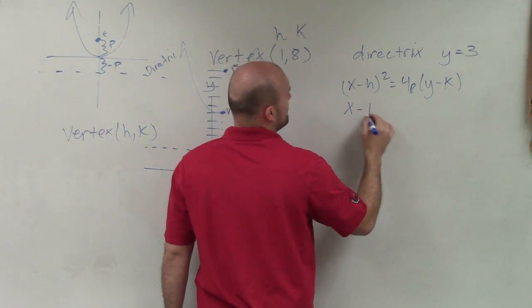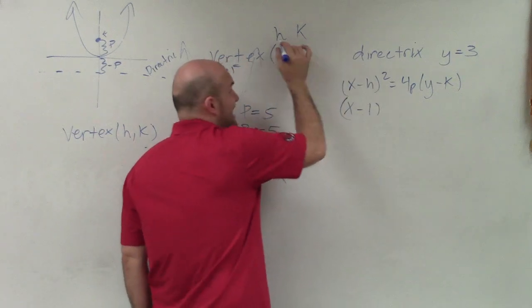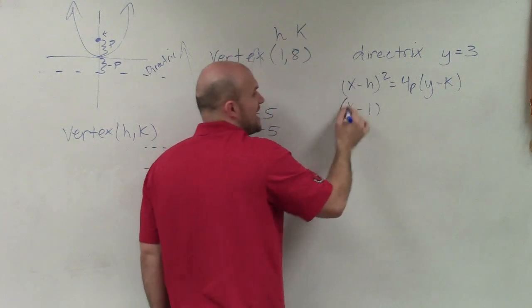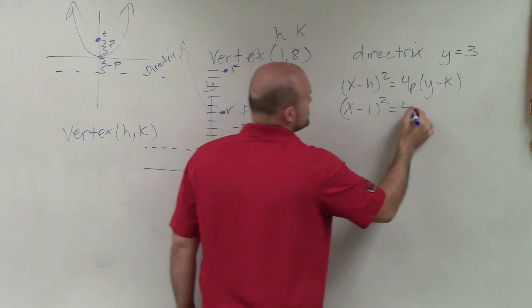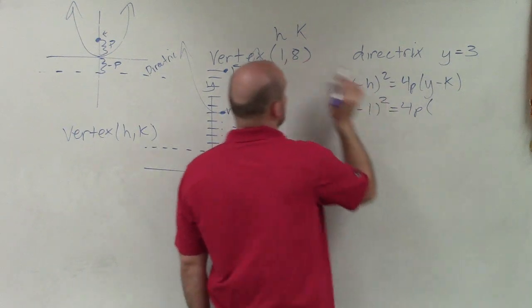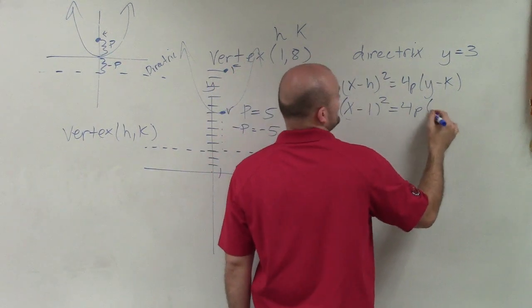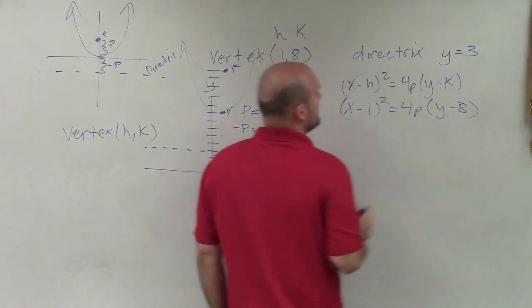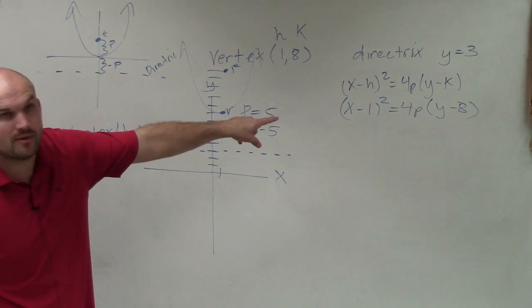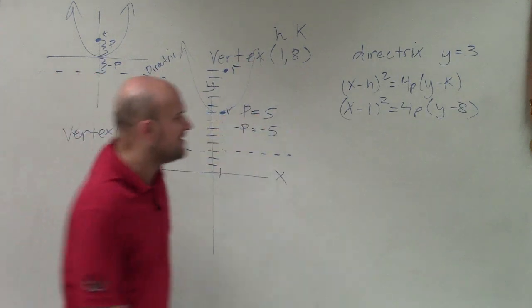So therefore, I'm just going to write x - 1. It's x - h. h is 1. (x - 1)² = 4p(y - k), which is (y - 8). And then, actually, I can simplify this. I can rewrite what p is. Because we've figured out p was 5.